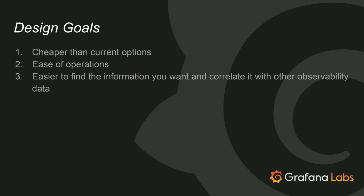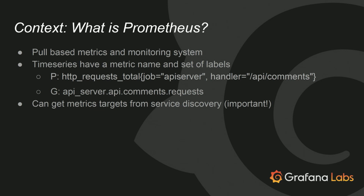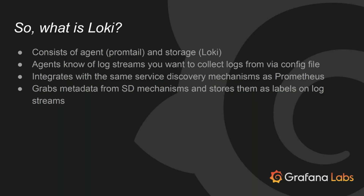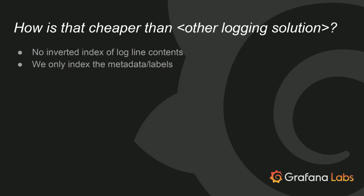We want to be able to easily correlate between log data and other observability data. For some context, Prometheus is a pull-based metric and monitoring system. It talks to your service discovery to know where your services are, and it attaches things like the Kubernetes job name as metadata to all your time series. Loki does the same thing, except it's getting your logs — it can find all of your Kubernetes pods, grab the standard out logging from those pods, and attach metadata the same way Prometheus does.